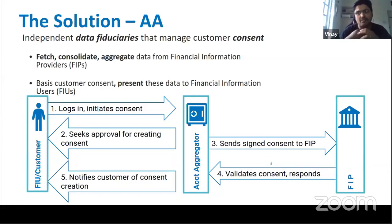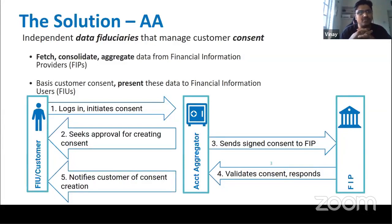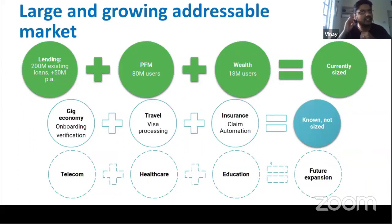There are three major players: the Financial Information Provider (FIP), who provides the data — could be a bank, GSTN, AMC, mutual fund, securities, insurance, etc. The Financial Information User (FIU) uses this data for an intended purpose such as lending, credit monitoring, wealth advisory, PFM, credit cards, etc. The Account Aggregator (AA) is the consent manager — without citizen-approved consent, the AA will not pass data. Importantly, the AA is data blind; it's more of a courier.